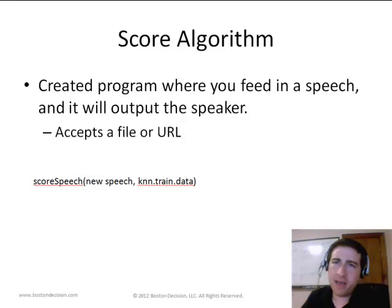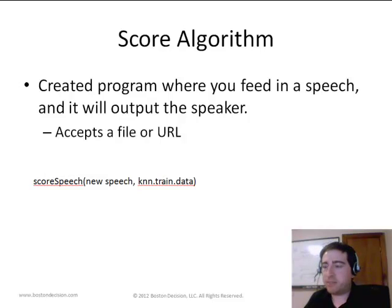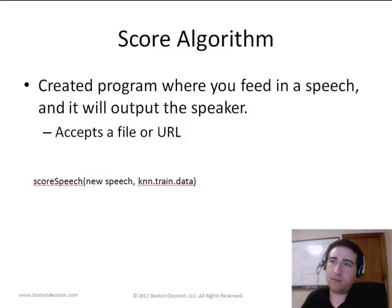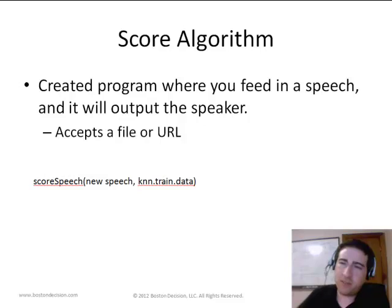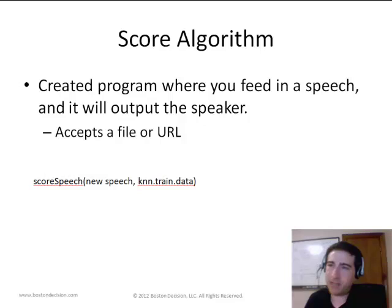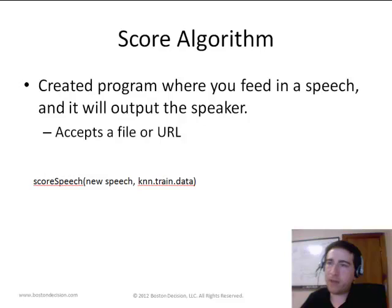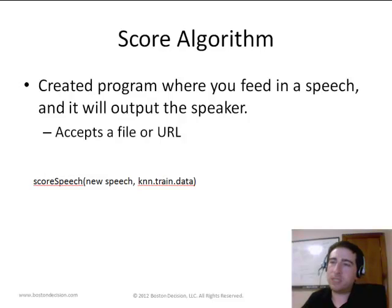The last step, if you want it to be really cool, is to create a scoring function. This takes in the memory from the k-nearest neighbor algorithm and you give it a new speech — it will then tell you who said it. We also took this a step further: what if the speech wasn't in a file, but online at a website? We created a function where you can provide a file or a URL along with the model memory, and it will output who said the speech located at that URL or file.